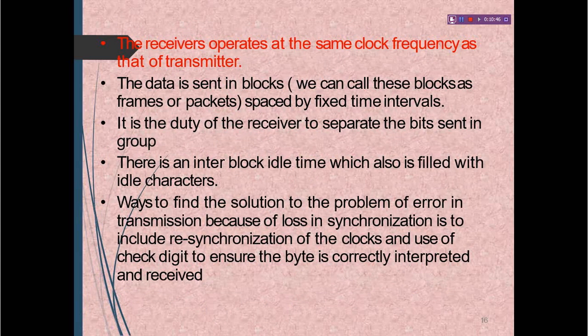The receiver operates at the same clock frequency as the transmitter. Data is sent in a block — called frames or packets — spaced by a fixed time interval. It is the duty of the receiver to separate the bits sent in groups. There is an inter-block idle time which is filled with idle characters. To handle errors from loss of synchronization, resynchronization of the clock and use of check digits ensure the byte is correctly interpreted and received.